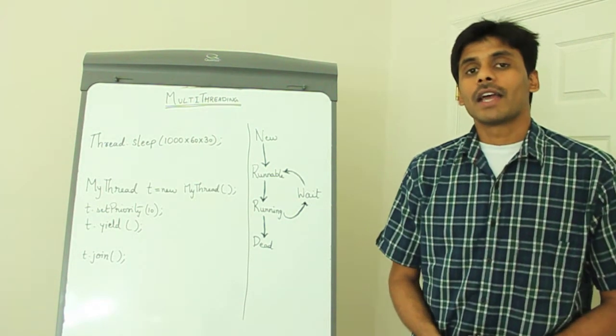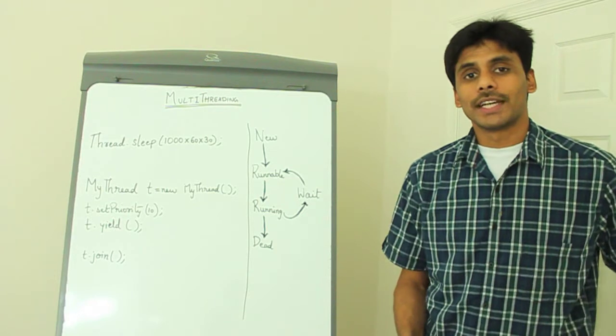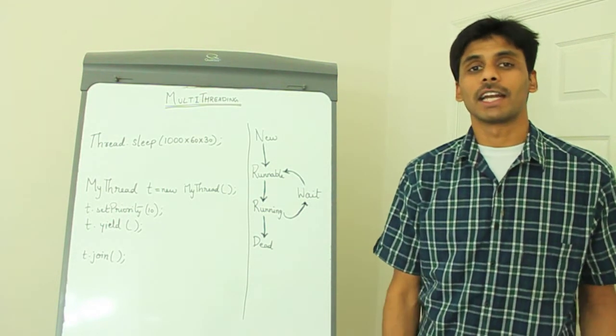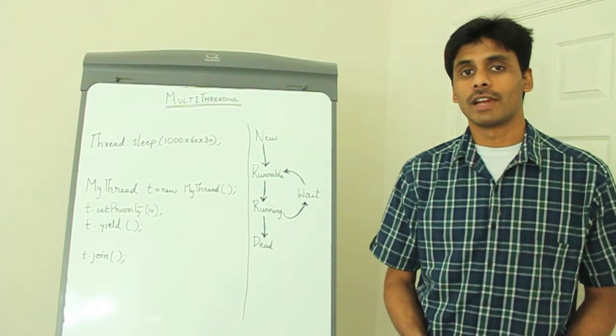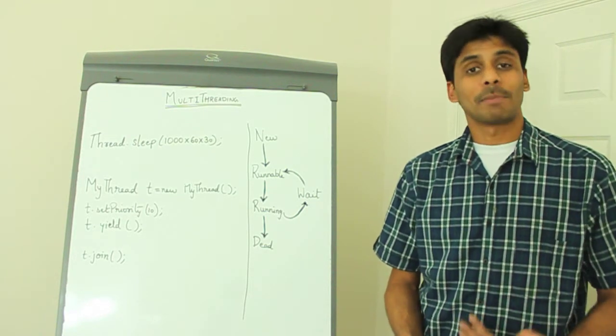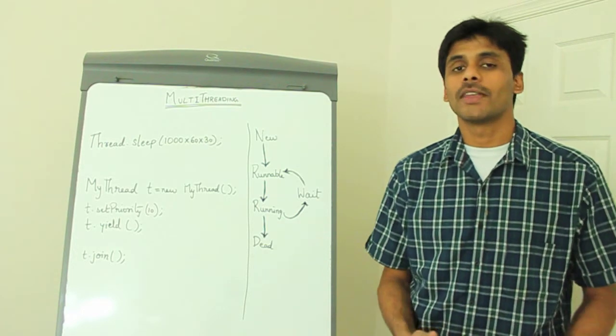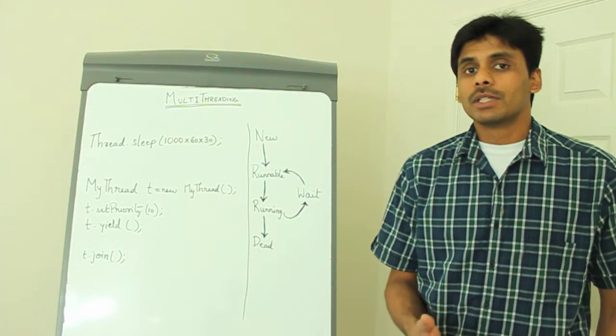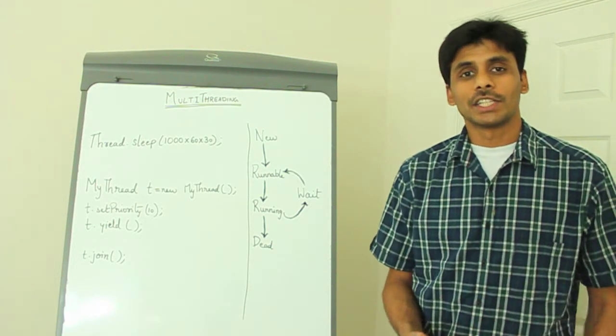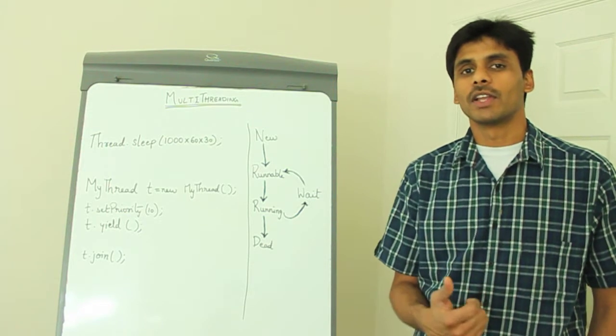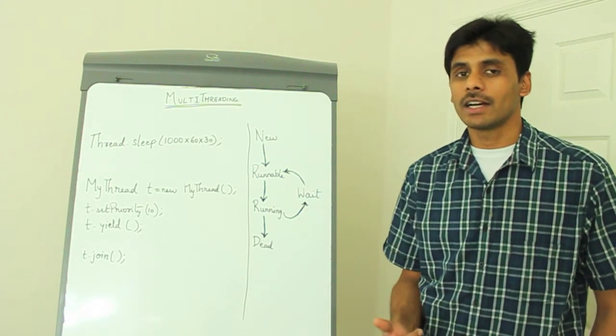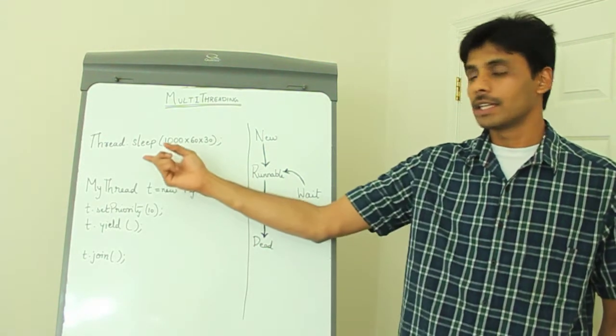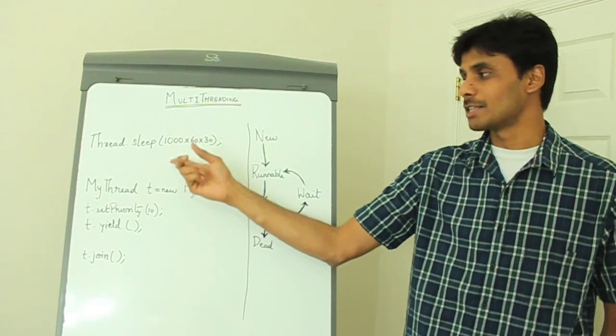For example, let's say we are working on an application that has two threads, one to pull the current exchange rates from a third party vendor, and another thread will do some complex calculation and display the result on the UI. So for the thread that pulls the currency exchange rate, since the rates don't change often, instead of continuously pulling this information, we can push this thread to a sleep state by invoking the sleep method and by passing in 30 minutes as milliseconds.